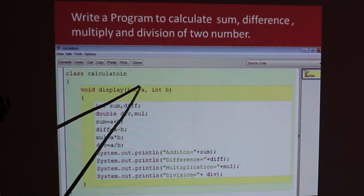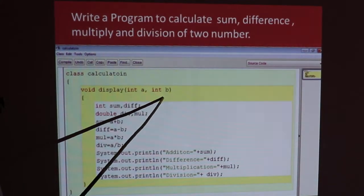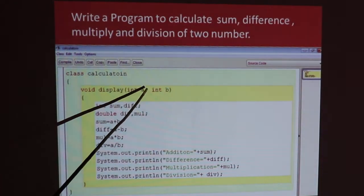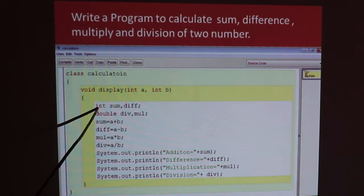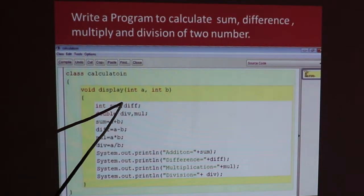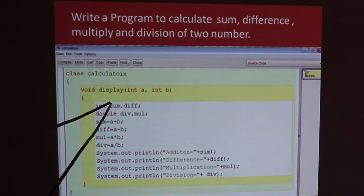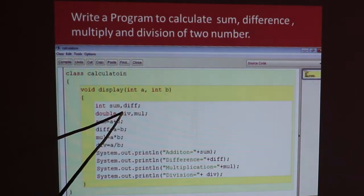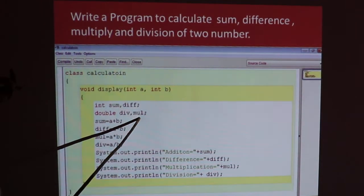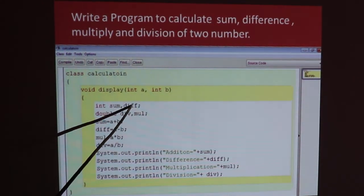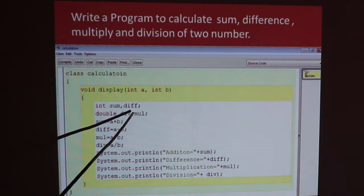We have two parameters passed: int a, comma, int b. Because we have two numbers from the users, we have four variables: one sum, one difference, one division and one multiply. All of these can be int type. If I have double type sum, double type difference, double type multiply, double type division, then there is no error.